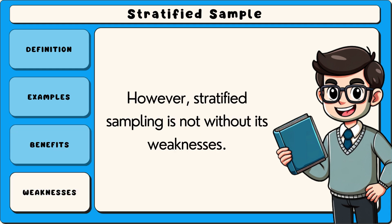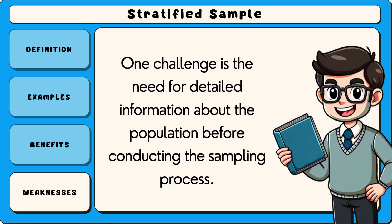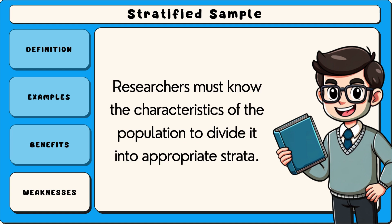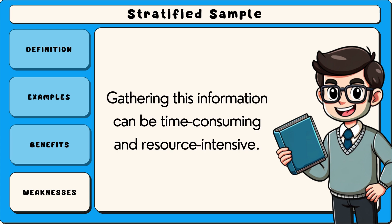However, stratified sampling is not without its weaknesses. One challenge is the need for detailed information about the population before conducting the sampling process. Researchers must know the characteristics of the population to divide it into appropriate strata, and gathering this information can be time consuming and resource intensive.